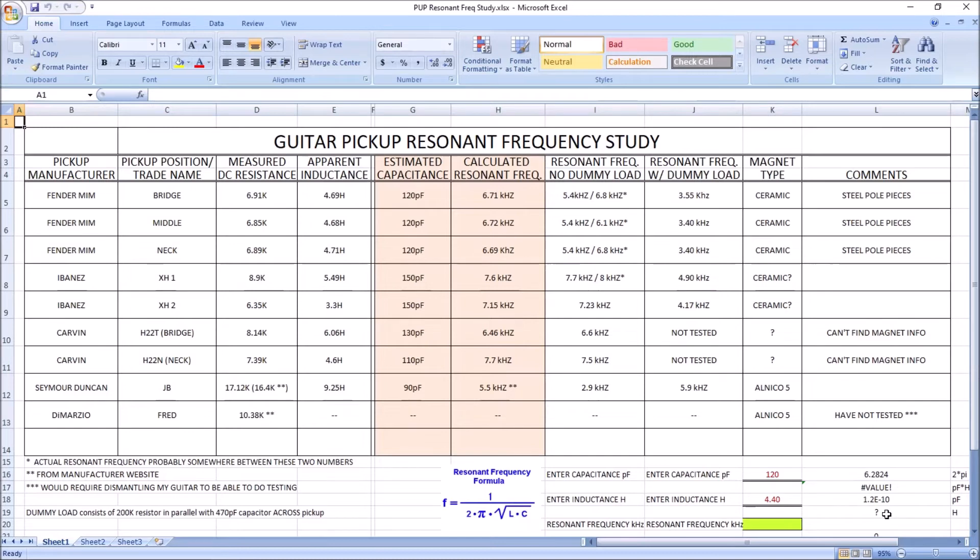So all that to say, I think this is a fairly accurate way to measure resonant frequency of the pickup without having to do any kind of special thing like build a driver coil and have a program so you can make a bode plot and all these things. I think this is just a simple quick and dirty method that'll give you some idea of a pickup's resonant frequency.